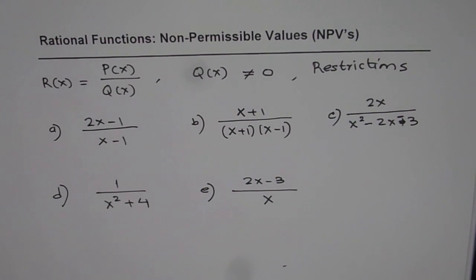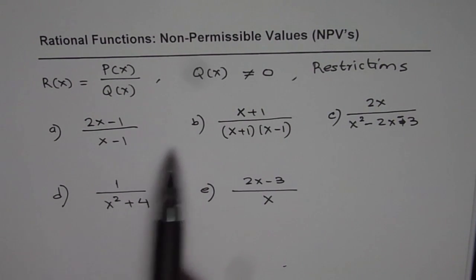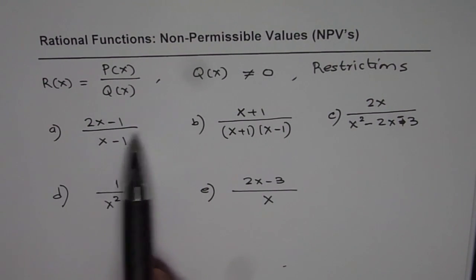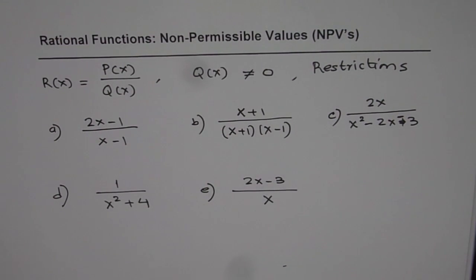So tell me what are the restrictions on each one of these rational functions. All of them are rational functions. The numerator and denominators are polynomials and we are dividing one by the other. Let's write down the restrictions one by one.